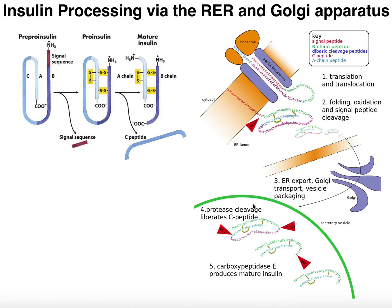We now have proinsulin, but we have to cleave off the C-peptide in two spots — one at the top and one at the bottom — removing the C-peptide entirely. This is catalyzed by two different proteases called pro-hormone convertases (or pro-protein convertases): pro-hormone convertase 2, and pro-hormone convertase 1 or 3. These are Golgi enzymes that wind up in the secretory vesicle to cleave off the C-peptide. There is one more step: we have to cleave off a couple of amino acid residues at the C-terminal end, catalyzed by carboxypeptidase E. Once those two C-terminal amino acids are removed, you have mature insulin.